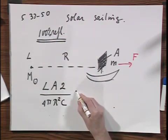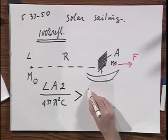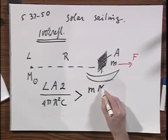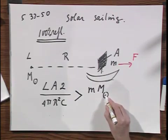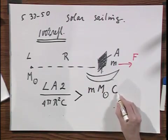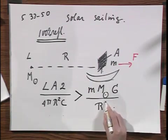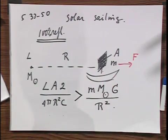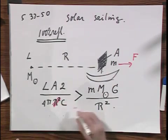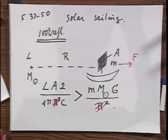We want this radiation force larger than the gravitational attraction, which is M, mass of the sun, times G, divided by R squared. And what you find now, which may not be so intuitive, is that this is independent of R. And the reason being that the Poynting vector falls off as 1 over R squared, but the gravitational attraction also falls off as 1 over R squared.